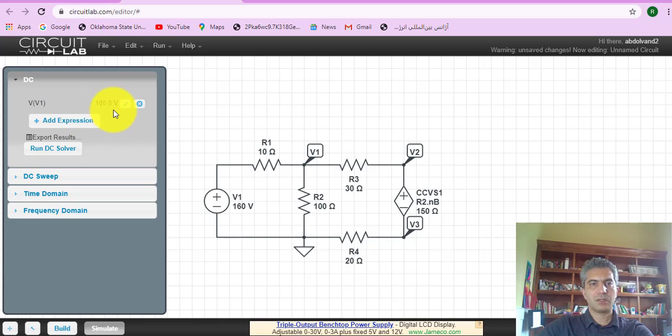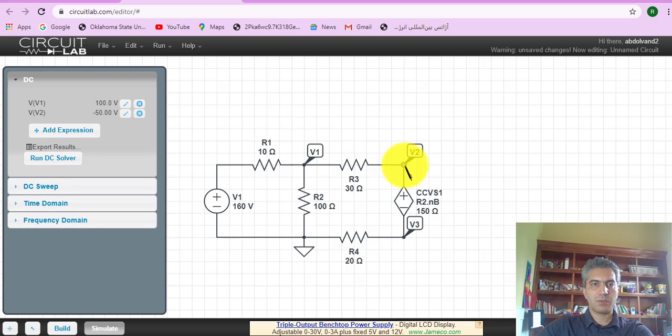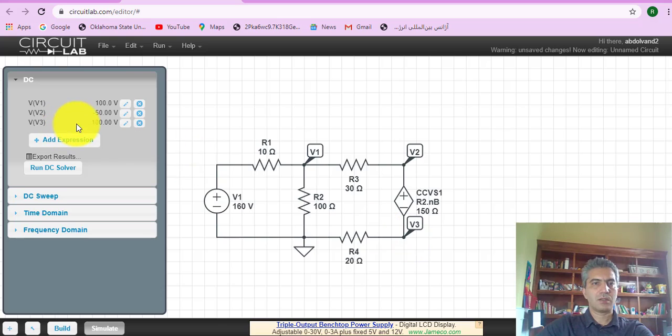So v1 is 100 volts. As you remember, that was what we calculated. Then you go here, v2 is minus 50. Again, that's what we calculated, and v3 is 100 volts.